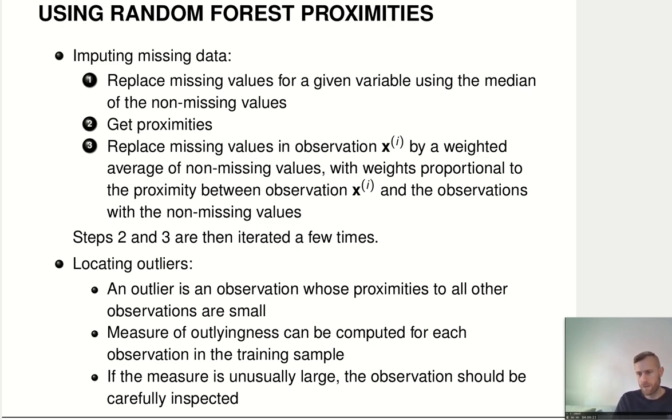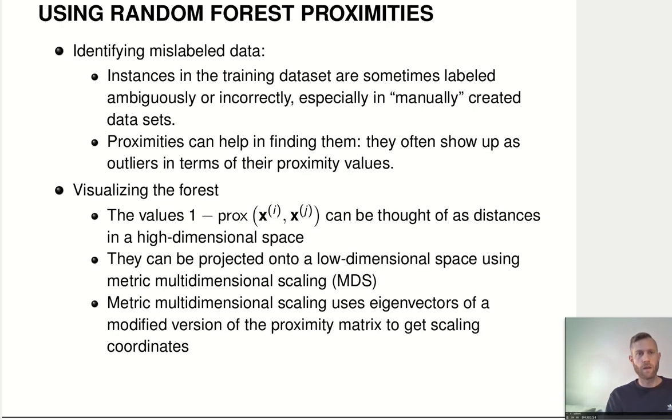So, do basically a post-processing of our model and look at observations that maybe are really untypical or weird. And actually that idea that outliers will tend to be in leaves, will tend to have few leaf memberships in common with others. That's actually an idea that's also used for random forests that are explicitly designed for outlier detection. They're called isolation forests. Look that up if that is something that interests you.